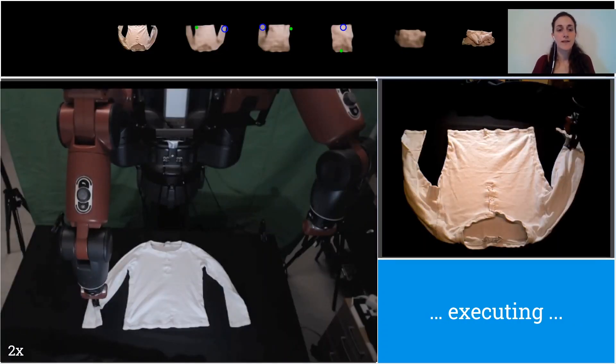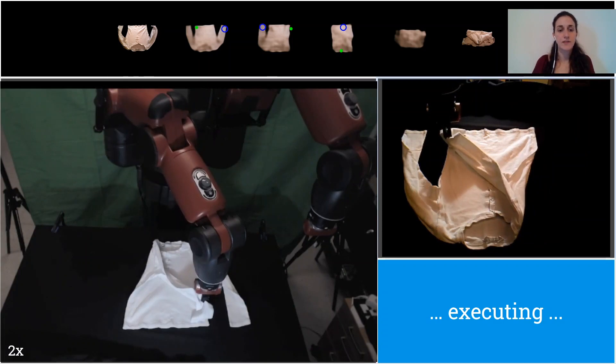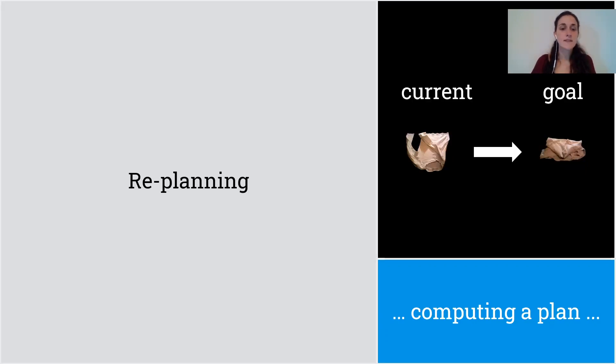At this point, we can actually execute the first action of the plan. And then we consider that we have a replanning step that takes into account possible uncertainties in executing the action.